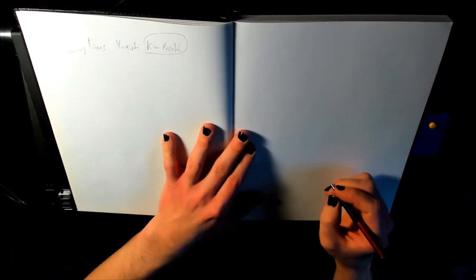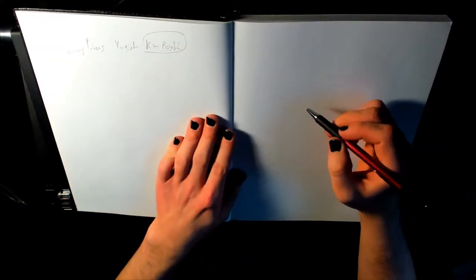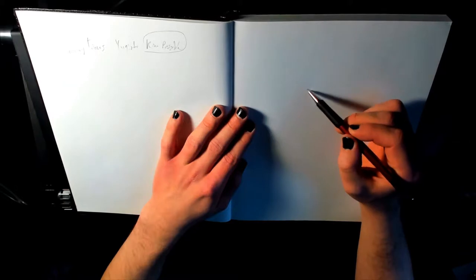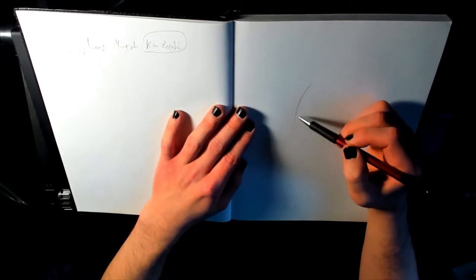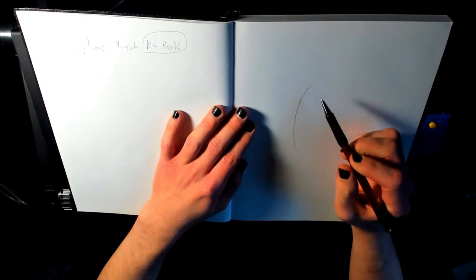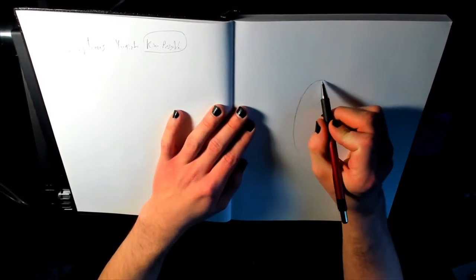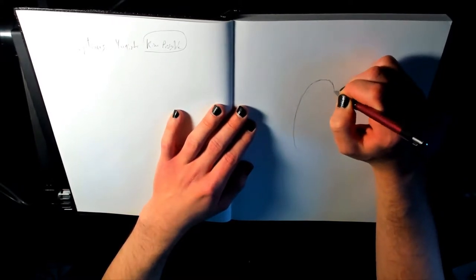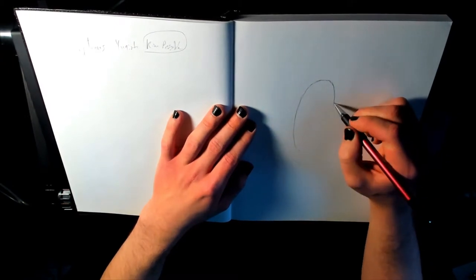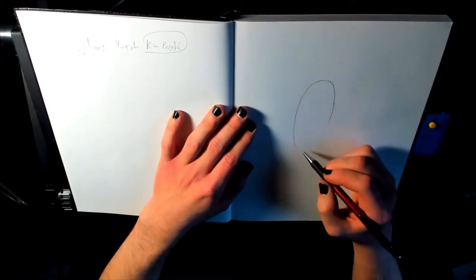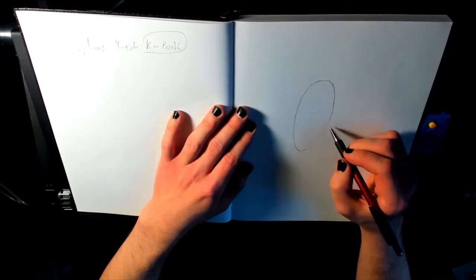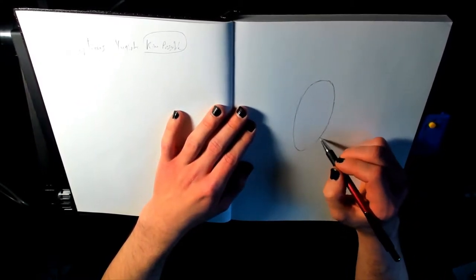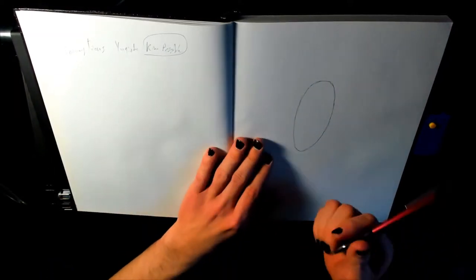Alright, shall we get started? Yes. First things first, we're going to draw kind of an elongated oval shape, kind of slender, but not too thin. Medium size, like, to be like the body. Okay. Cool. So slender, but not too thin.